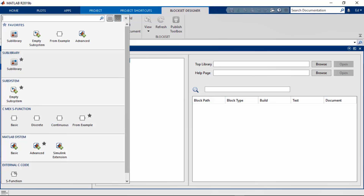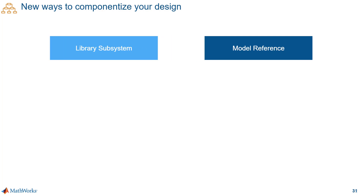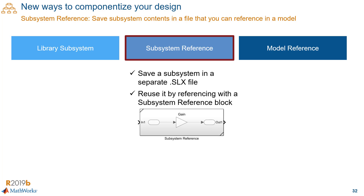That is a new way to create and manage your components. There are also new ways to componentize your design. In addition to libraries and model references, you now have a new way to componentize your models with subsystem reference. The concept is simple: you can save the contents of a subsystem in a separate SLX file, and then reuse it in a model by referencing it with a subsystem reference block.